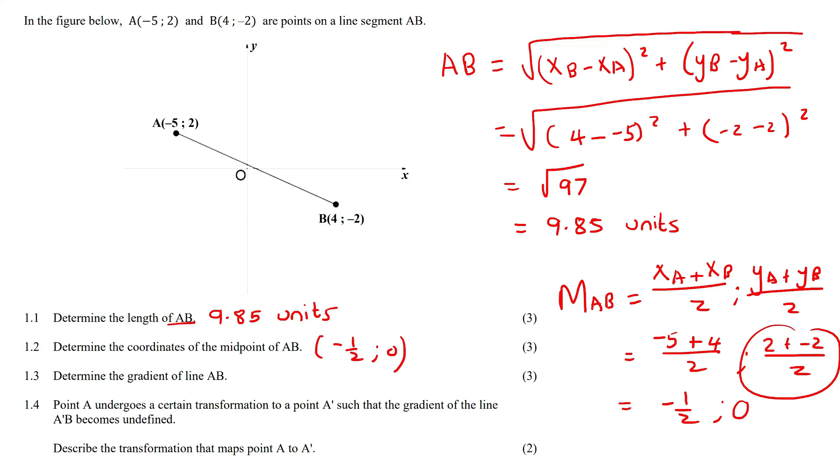This next one says determine the gradient. For gradient we use a small m, and we're going to say the gradient of AB. Now we're going to use the formula y2 minus y1 over x2 minus x1. Because we're using A's and B's you don't have to do it like this - I just sometimes do it, sometimes I don't.